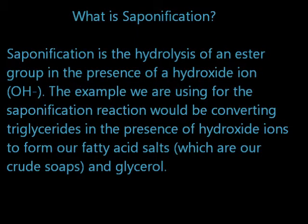Using the saponification reaction, we will show examples on how soap is made. Saponification is the hydrolysis of an ester group in the presence of a hydroxide ion. The example we are using for the saponification reaction would be converting triglycerides in the presence of hydroxide ions to form our fatty acid salts, which are our crude soaps and glycerol.